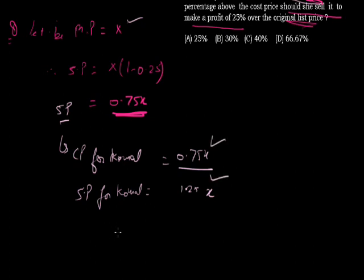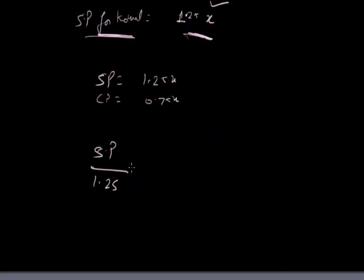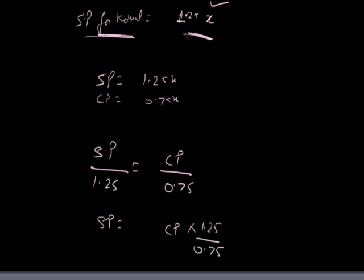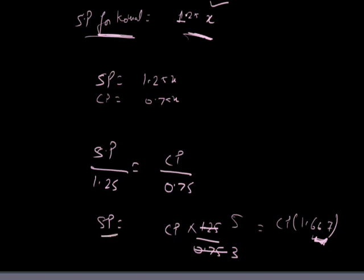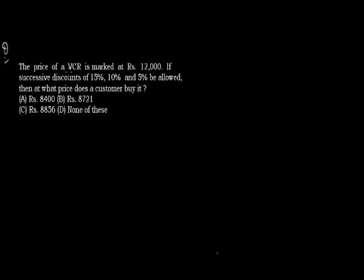Now we know CP = 0.75X and SP = 1.25X. So SP = CP × (1.25 / 0.75) = CP × (5/3) ≈ 1.667 × CP. Therefore SP = 1.667 of CP, meaning the gain is approximately 66.7%.